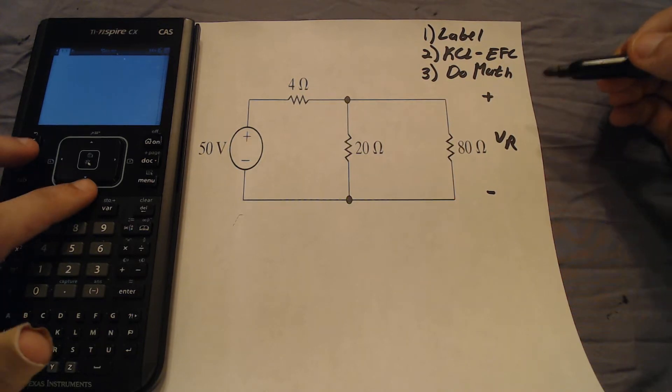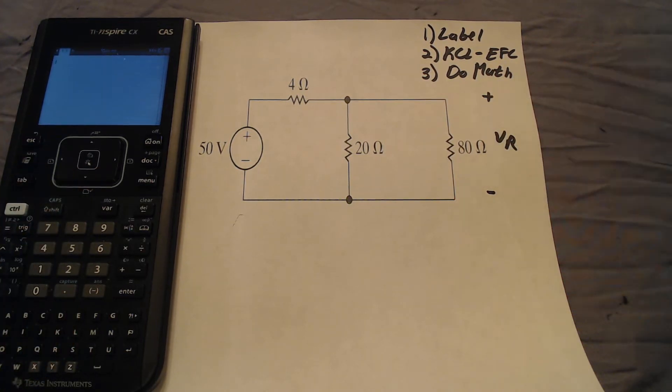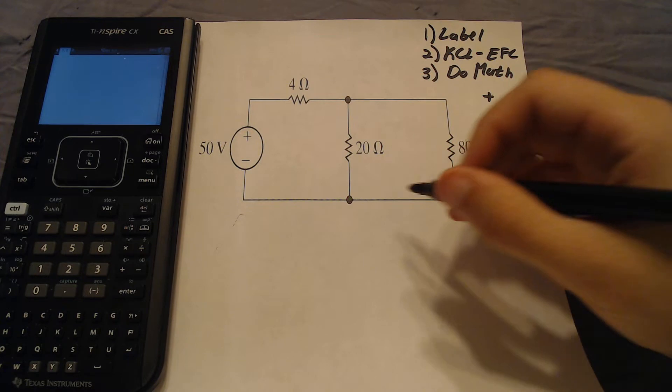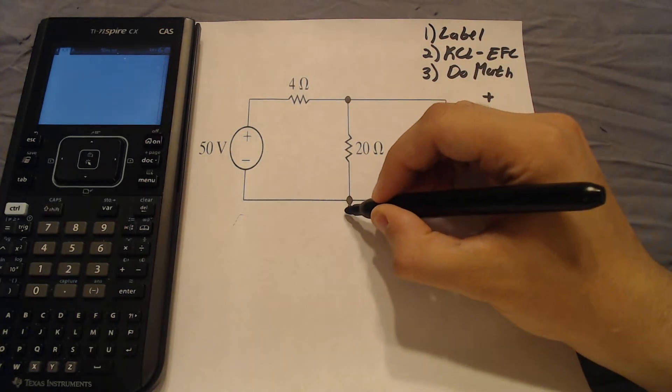In this problem, it's asking us to find what the voltage across the 80 ohm resistor is. I've labeled that voltage as Vr. So our first step in solving this problem is to label all our nodes and all our currents.